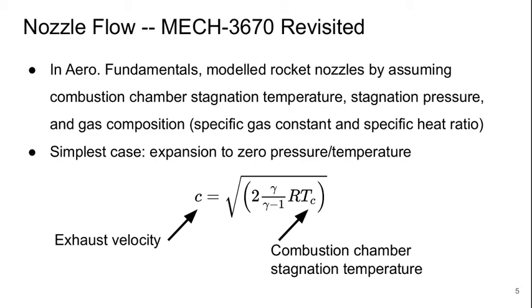From there, we're able to follow isentropic flow through the nozzle. The simplest possible case is if we imagine we're out in space and we're expanding to zero pressure and zero temperature.